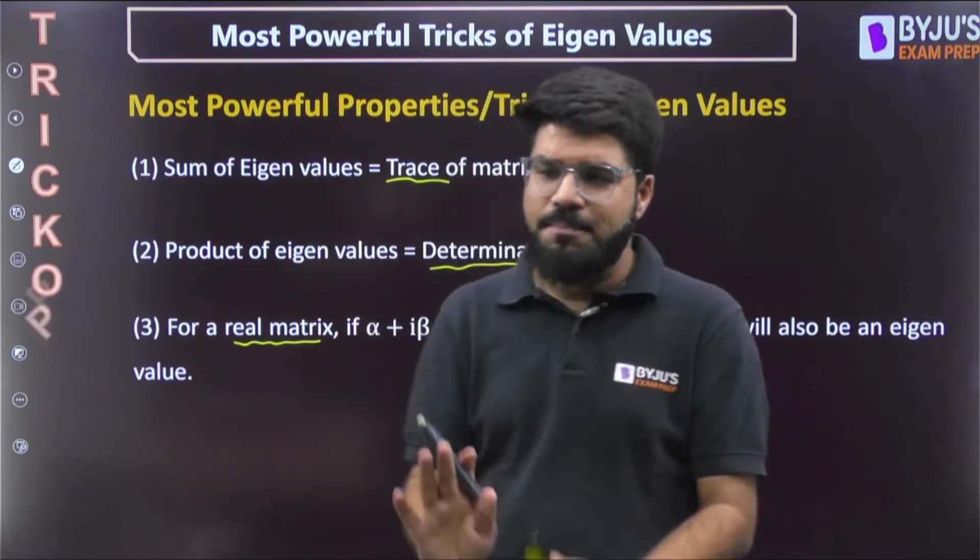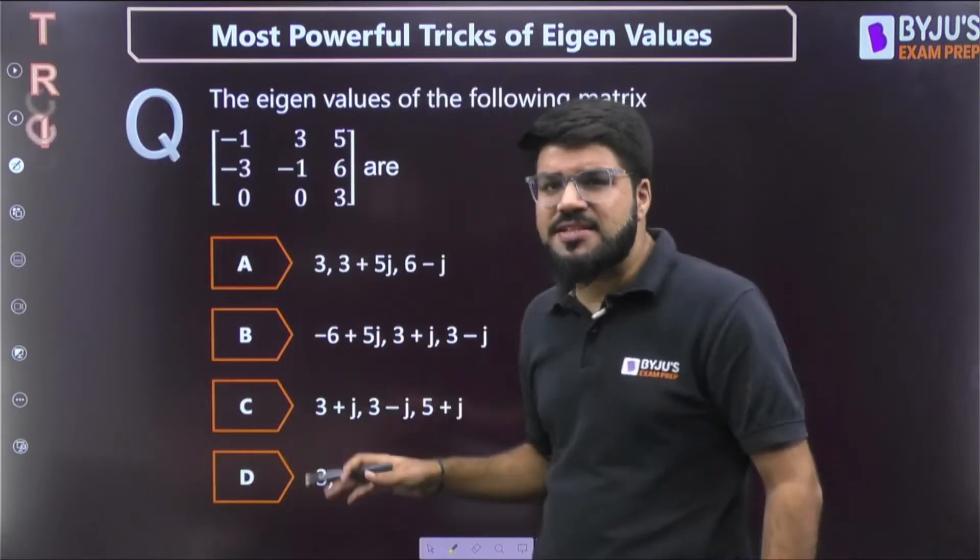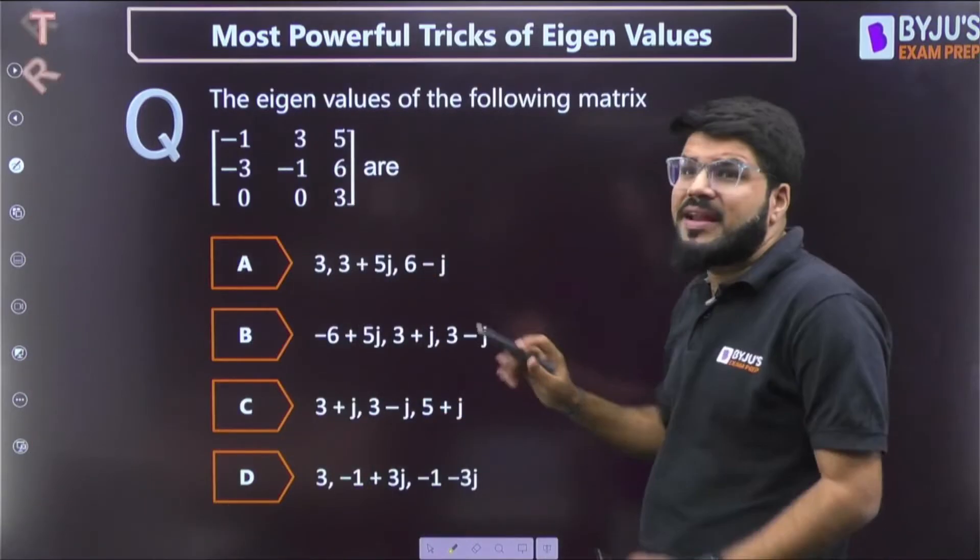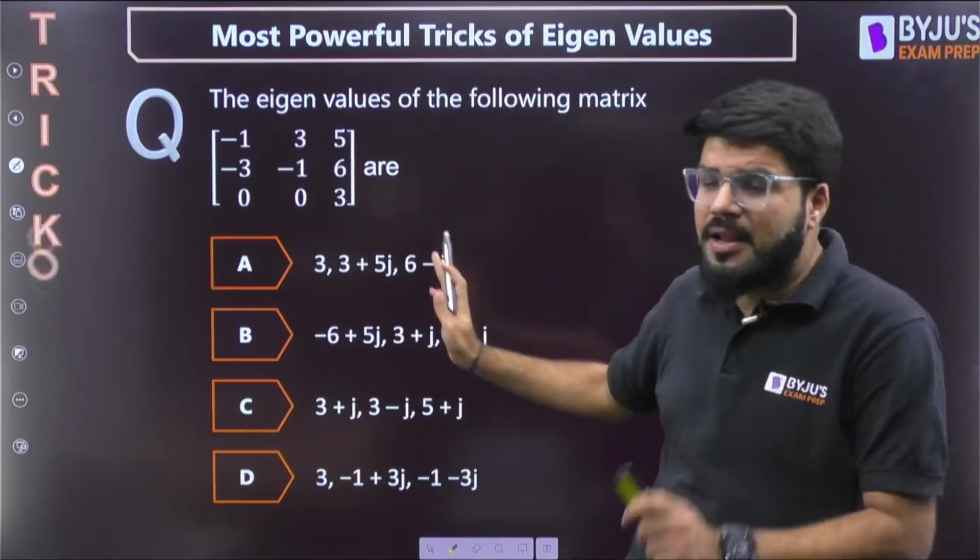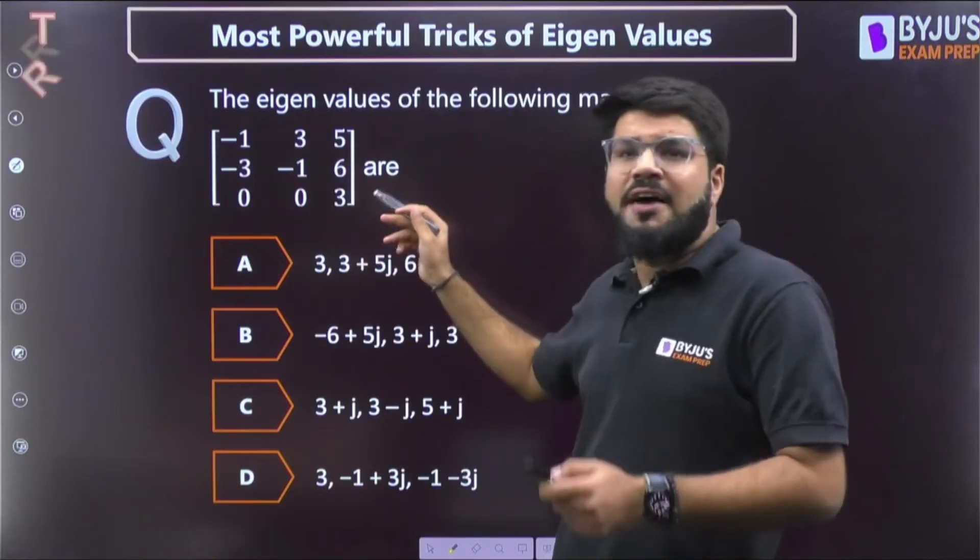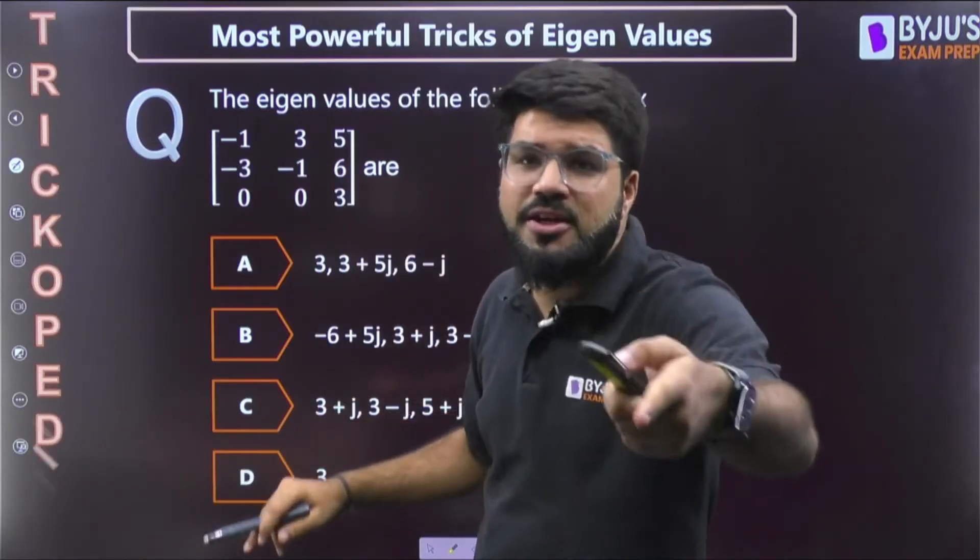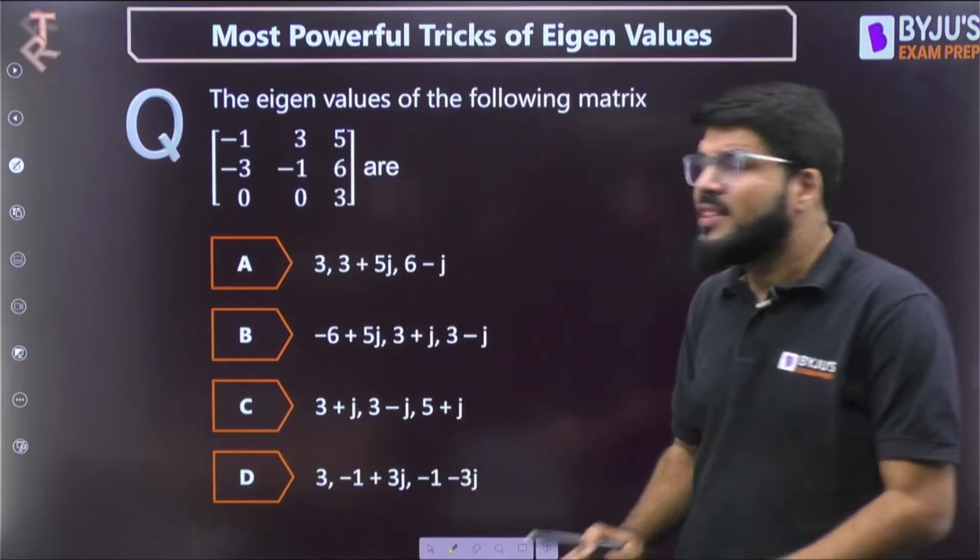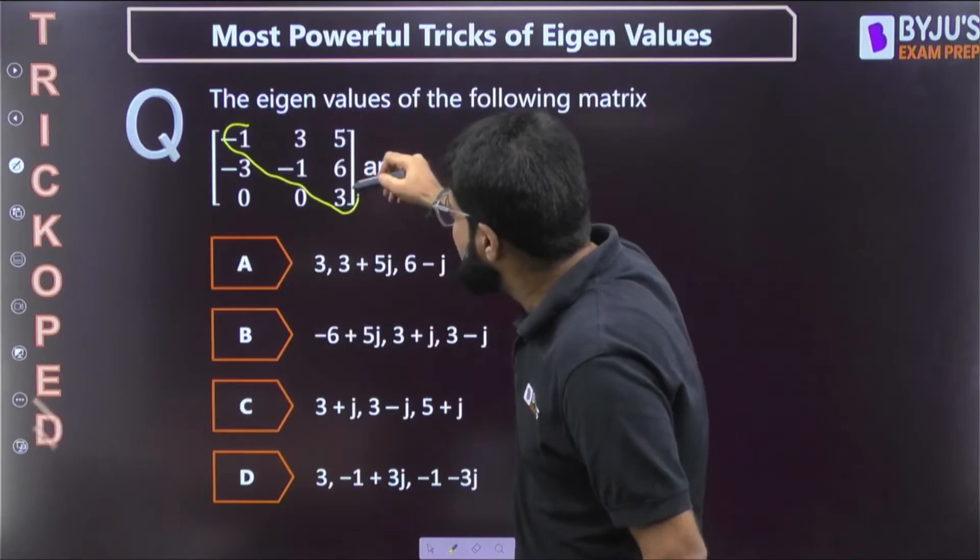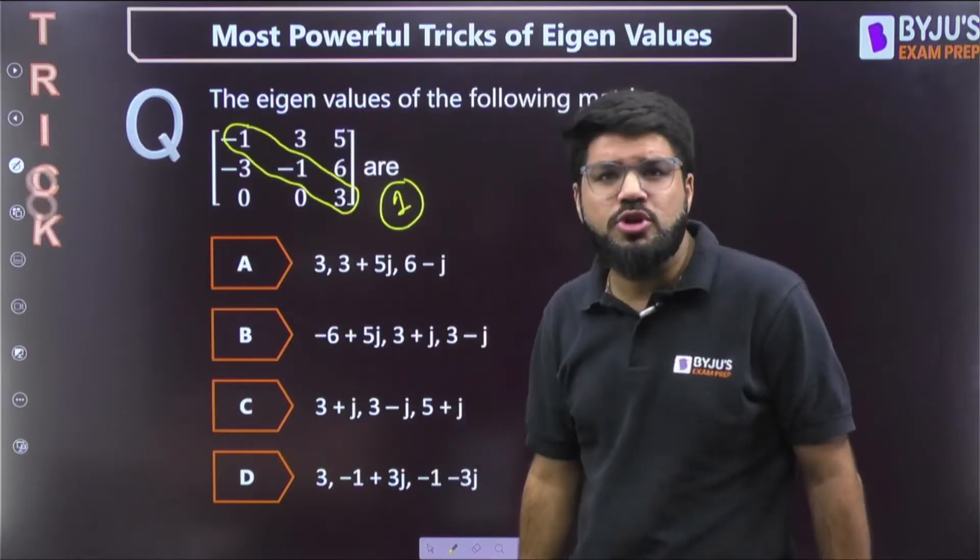Let's have a look into this question. The eigenvalues of the following matrix, and these are similar questions that can be expected in competitive exams. Do you need to solve? There is one method beta 1, beta 2, beta 3 that I have told in one of my earlier shortcut Trickopedia videos, but that's also not required. If you calculate the trace, minus 1, minus 1, 3, the trace is equal to 1. The sum of eigenvalues should be 1.